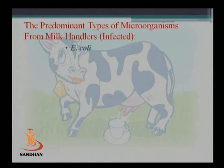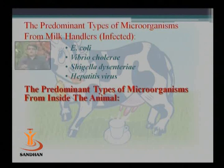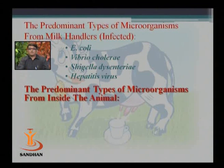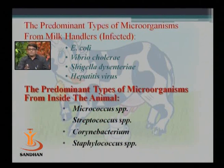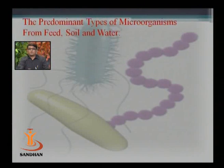Now a quick look at the types of bacteria giving contamination in different areas. The predominant types of microorganisms from milk handlers include E. coli, Vibrio coli, Shigella dysentery, and Hepatitis virus — these are the possible organisms which can invade via the person handling milk. Predominant types of microorganisms from inside the animal include Micrococcus species, Streptococcus, Corynebacterium, and Staphylococcus — these are the types of organisms which can also spoil our milk.